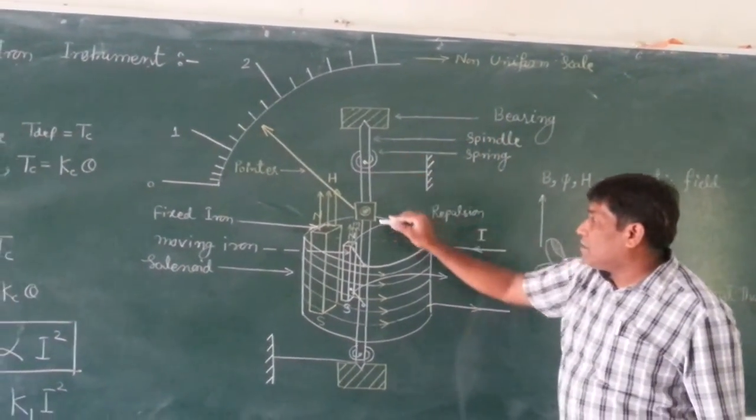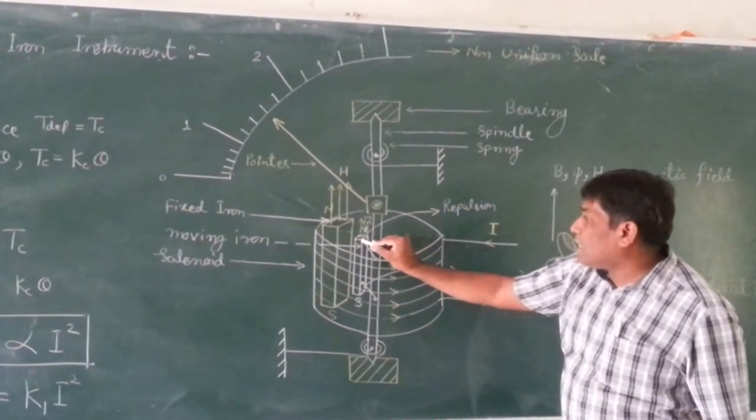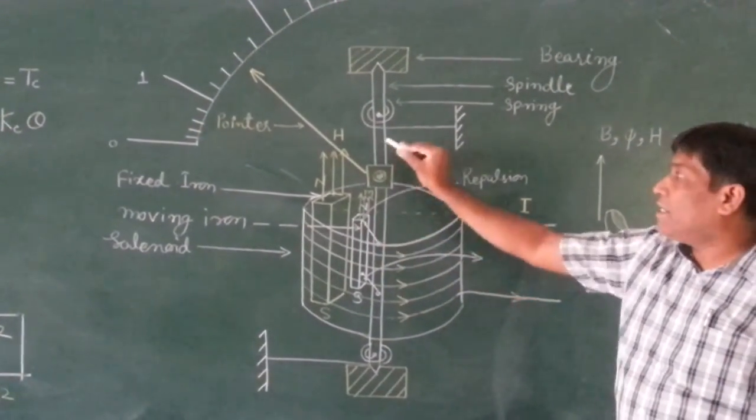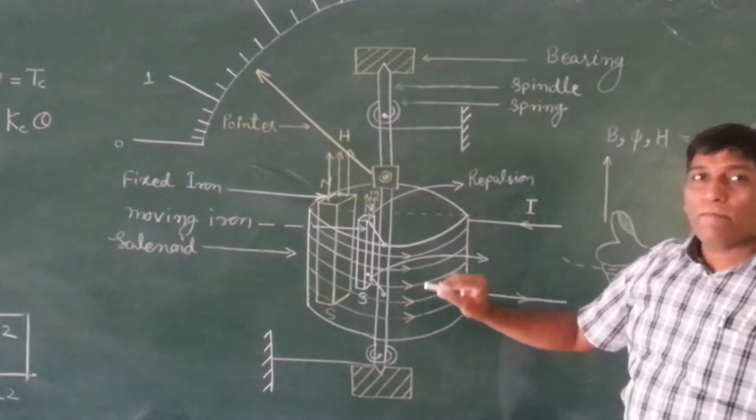And to the bearing, we are having one iron piece which is attached, which facilitates the movement of the pointer because it is attached to the spindle.